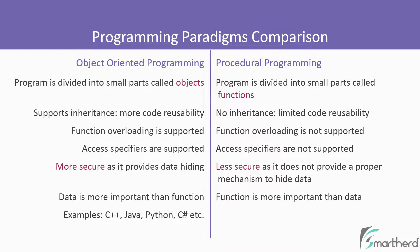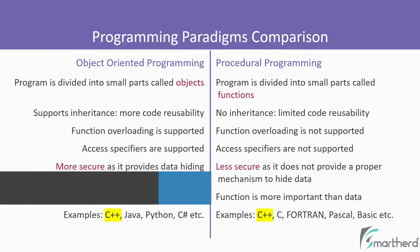Languages such as C++, Java, Python, and C-sharp fall under the OOP paradigm. And languages such as C++, Fortran, Pascal, C, and Basic come under the procedural paradigm. You can note that C++ supports both the OOP paradigm as well as the procedural paradigm, which is why C++ is often referred to as a hybrid language.